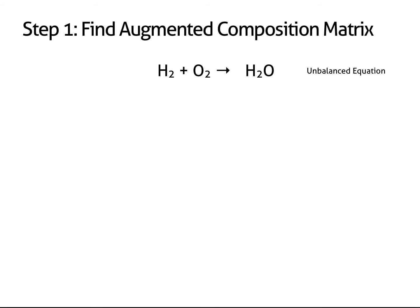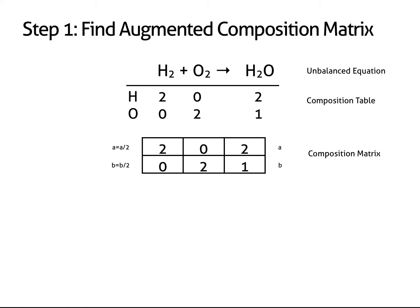To show you how this works, let's try balancing a simple equation. The first step is to write the unbalanced equation without coefficients. Next, prepare a composition table. This is a convenient way to account for all of the elements on each side of the equation. Simplifying the composition table gives a matrix. If you're not familiar with matrices, don't worry. I'll be working a couple of examples so you can see what's going on.